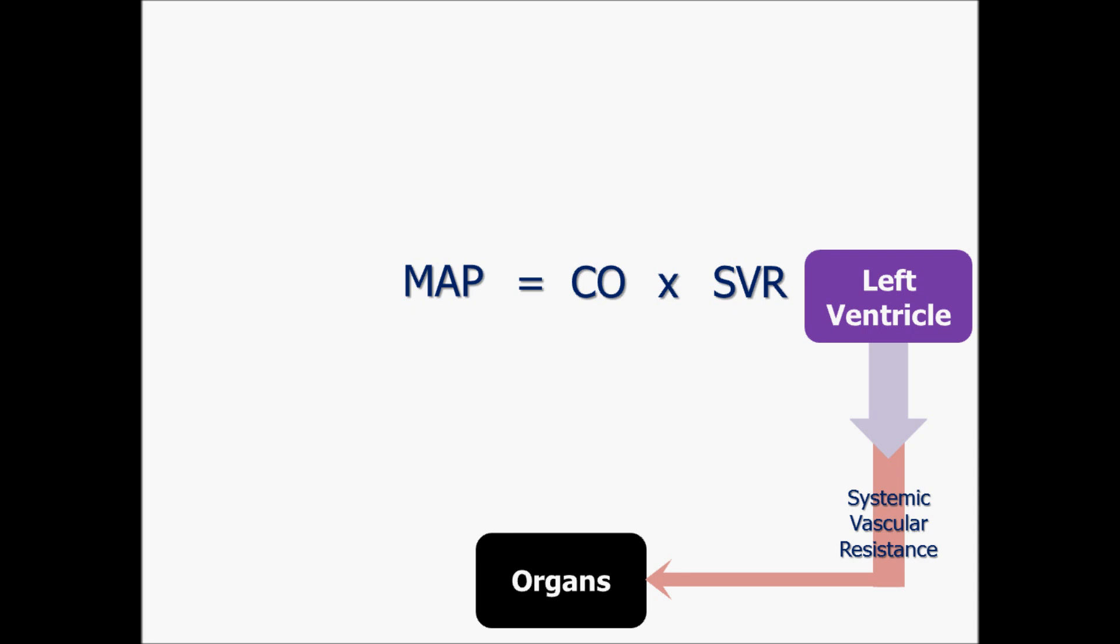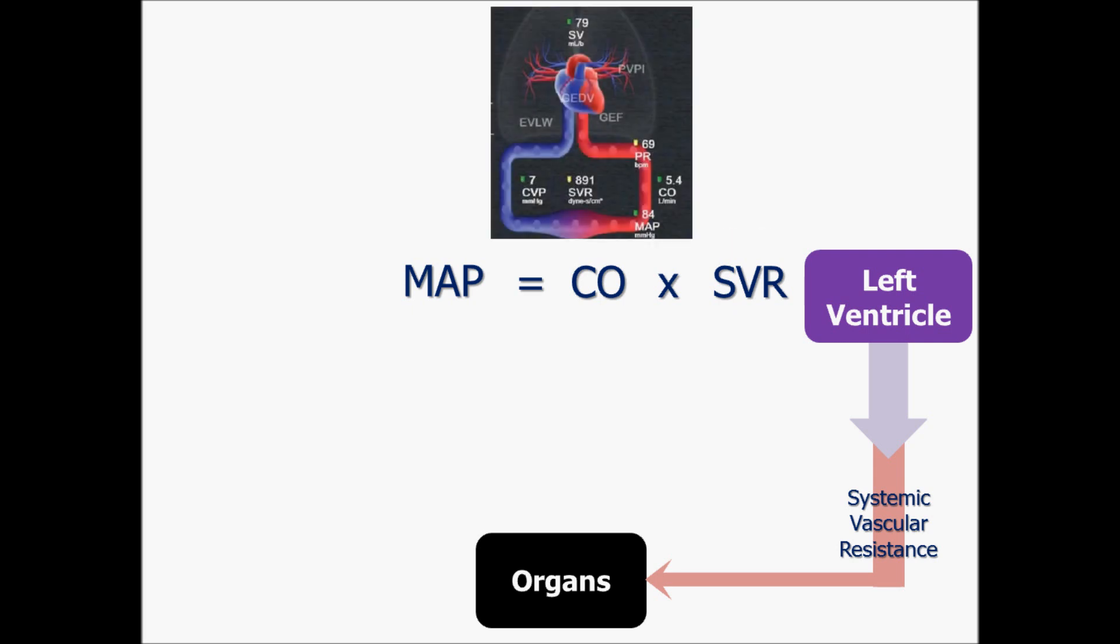This is sometimes also referred to as total peripheral resistance, but the terms are interchangeable. SVR is going to be one of those parameters that you can monitor with a hemodynamic monitor in the ICU. The normal range runs about 800 to 1200, but don't memorize this. Just be aware of the concept.